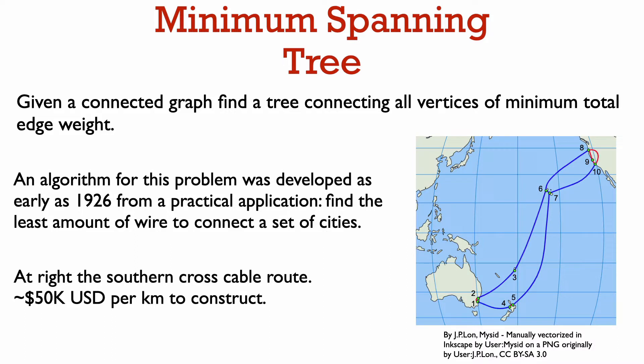Another venerable graph problem is to find a so-called minimum spanning tree. Algorithms for this problem were given as early as 1926 and used to construct efficient electricity networks. In the picture here we have the Southern Cross Cable, a trans-pacific network of cables. Laying this cable is extremely expensive — it costs around $50,000 US dollars per kilometer. In this problem, we have a set of cities that we want to connect by cables. We also have certain possible pathways between cities the cable can take, each with an associated cost based on the distance. The minimum spanning tree problem is to find the minimum cost of laying cable that connects all of the cities.